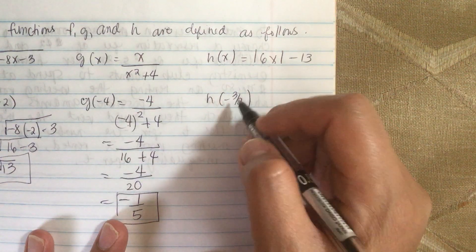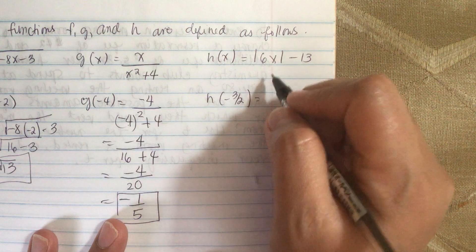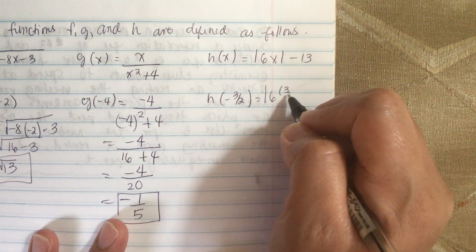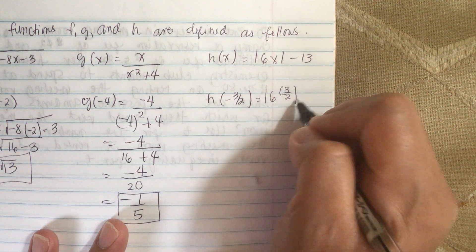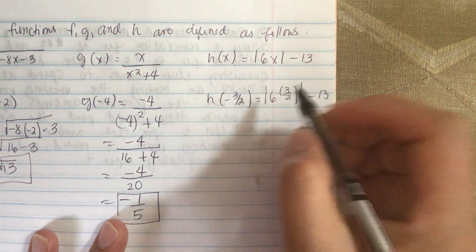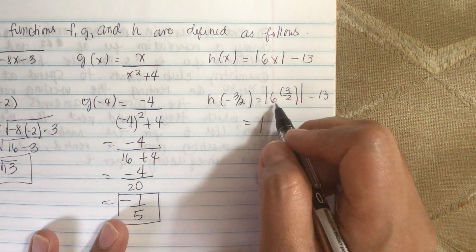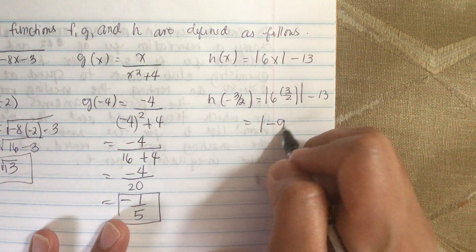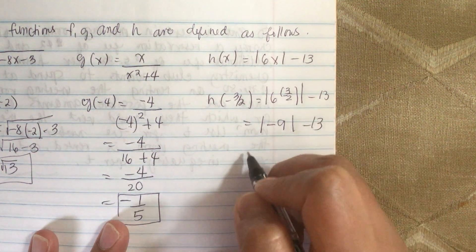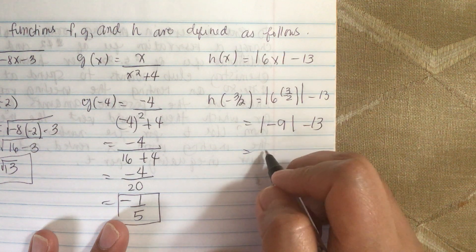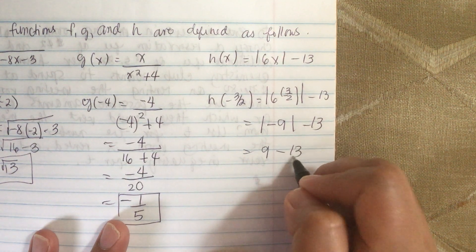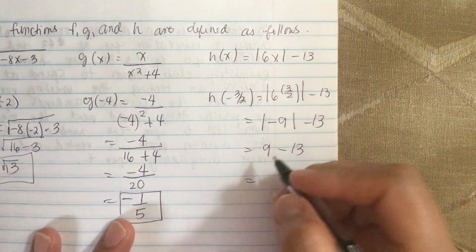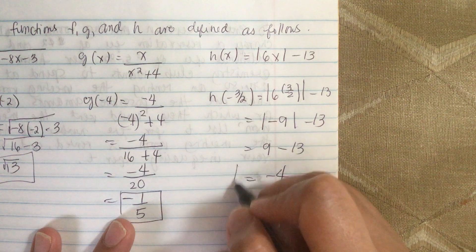And then we have h of -3/2. So we have 6 times -3 over 2, then absolute value minus 13. So 6 times 3 is 18, divided by 2 is -9. And the absolute value of -9 is 9. So this is equal to -4.